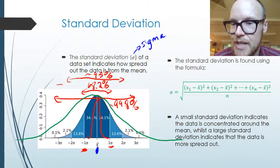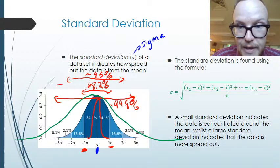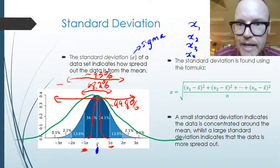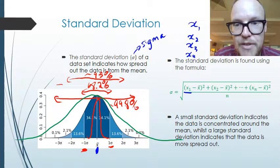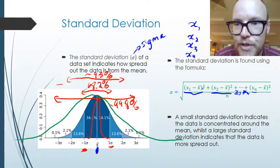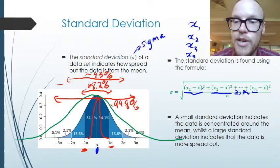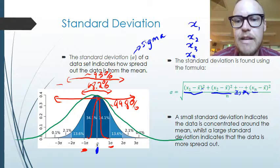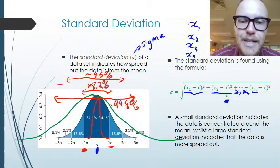We can calculate the standard deviation using this formula. We take each score — X1, X2, X3, X4, and so on — and for each individual score we subtract the mean, then square that value. We add all of those squared deviations together for every value from X1 up to Xn, divide by the number of scores we have, and then take the square root of the whole lot.